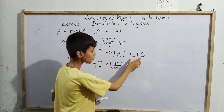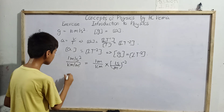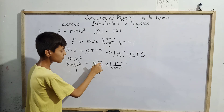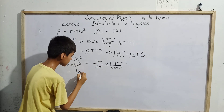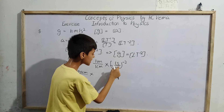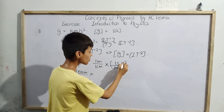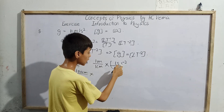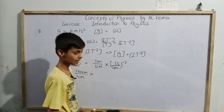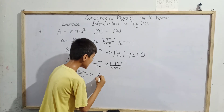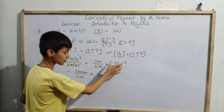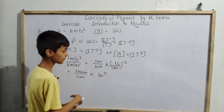Now we solve this. In 1 meter there are 100 centimeters, so 1 meter divided by 1 centimeter equals 100. For the time part, we have 1 second by 1 minute raised to the power minus 2. To make the exponent positive, we take its reciprocal: 1 minute divided by 1 second, raised to the power 2. In 1 minute there are 60 seconds, so this equals 60 squared.